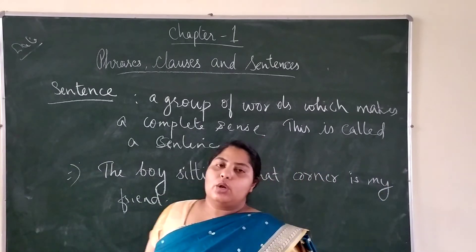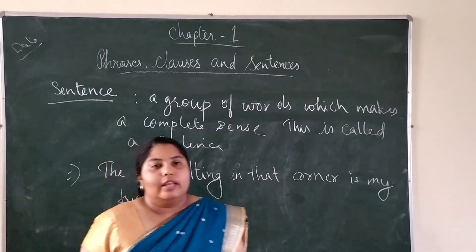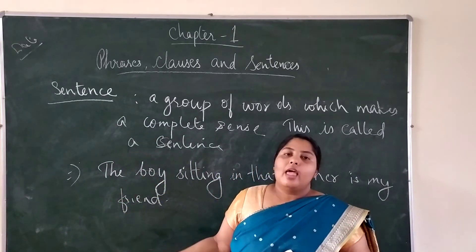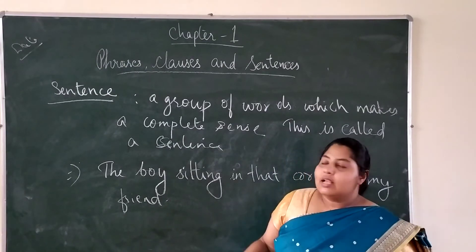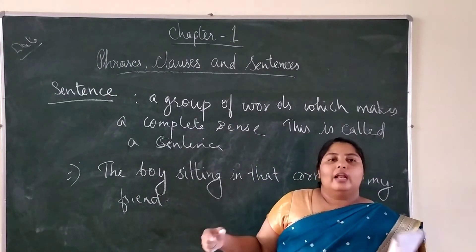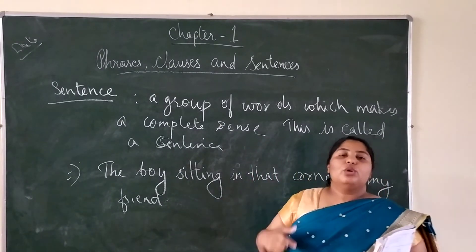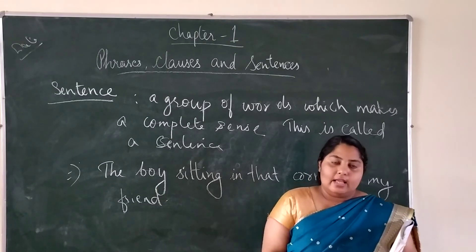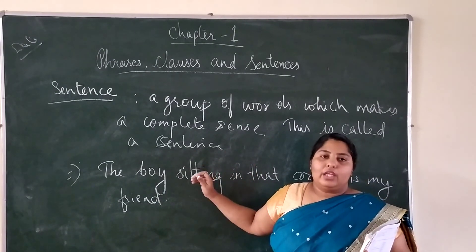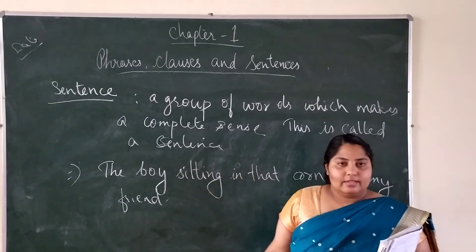In the next chapter — next video — we will study about kinds of sentences. There are four kinds of sentences and we will come to know what sentences they are, how it is useful to make a sentence, and how we will come to know what type of sentence it is. We will do exercises in the same way. Till then, thank you — review all these things and try to learn. Thank you.